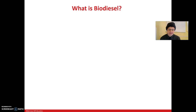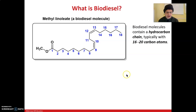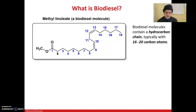This is an example of a biodiesel molecule — methyl linoleate — which is an ester of a fatty acid. Biodiesel molecules typically have a hydrocarbon chain consisting of 16 to 20 carbon atoms. This one has 18 carbon atoms, drawn in line notation, where each intersection is a carbon atom. We assume each carbon has four bonds, so carbon six has two bonds to other carbons and two bonds to hydrogens not shown.